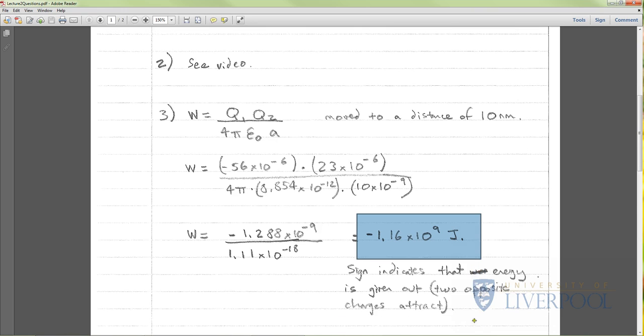What does the sign indicate? The sign indicates that energy is given out, so we're not having to supply energy to this system for the charges to move. This makes sense because these are two oppositely charged particles, so they're going to want to move together. That's why we've got a minus sign. It means energy is given out. A lot of these questions you just need to think about them.